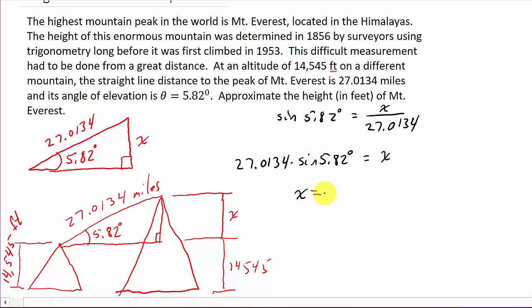And that is going to give me X = 2.739255195. If you're doing this for homework in MyMathLab, WebWork, or WebAssign, you might want to use all the decimals. But for the sake of the video, I'm just going to round it to 2.7 miles.